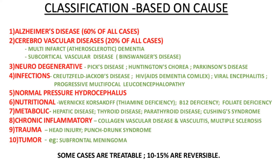Infections causing dementia include Creutzfeldt-Jakob disease, HIV known as AIDS dementia complex, viral encephalitis, and progressive multifocal leukoencephalopathy. Other causes include normal pressure hydrocephalus, nutritional deficiencies such as Wernicke-Korsakoff thiamine deficiency, B12 deficiency, and folate deficiency, as well as metabolic causes including hepatic disease, thyroid disease, parathyroid disease, and Cushing's syndrome. Chronic inflammatory conditions such as collagen vascular disease, vasculitis, and multiple sclerosis are also causes, along with trauma such as head injury and punch drunk syndrome, and tumours. Some cases are treatable and about 10–15% are reversible.